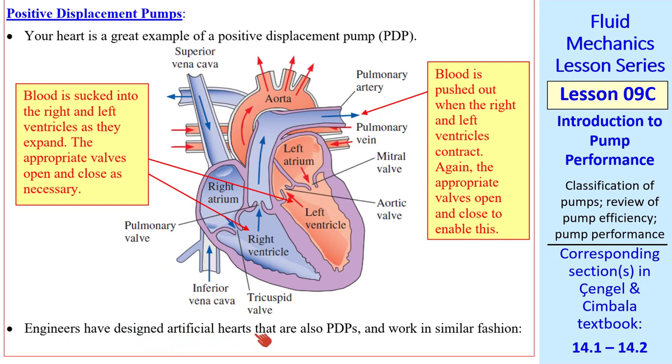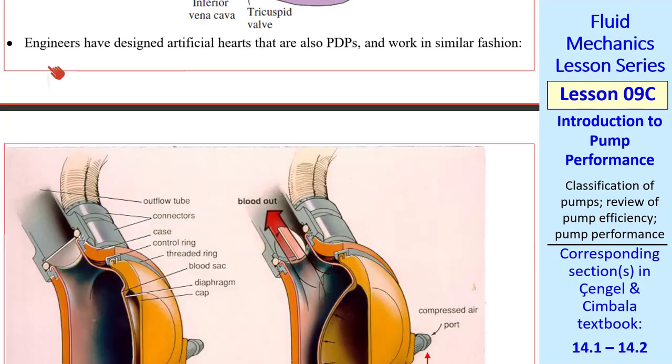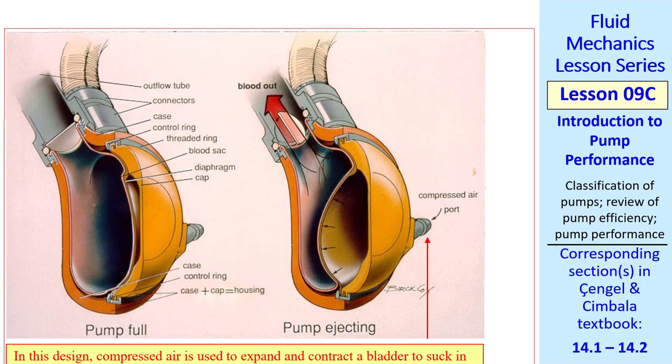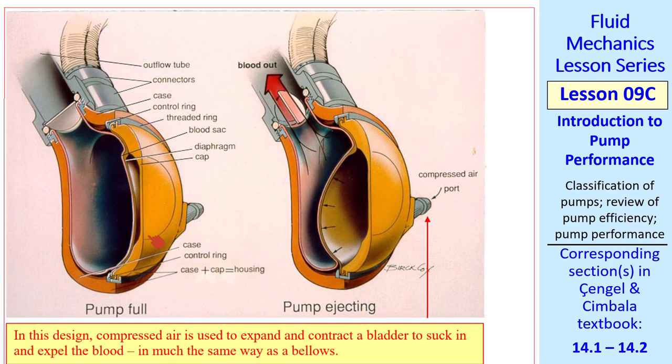Engineers have designed artificial hearts that are also PDPs. Here's an example of one that uses compressed air. Air comes in externally. When air is pumped into this bladder, it pushes blood out. And when the air is sucked out of the bladder, it draws in. There are mechanical valves that replace the natural valves in the heart.